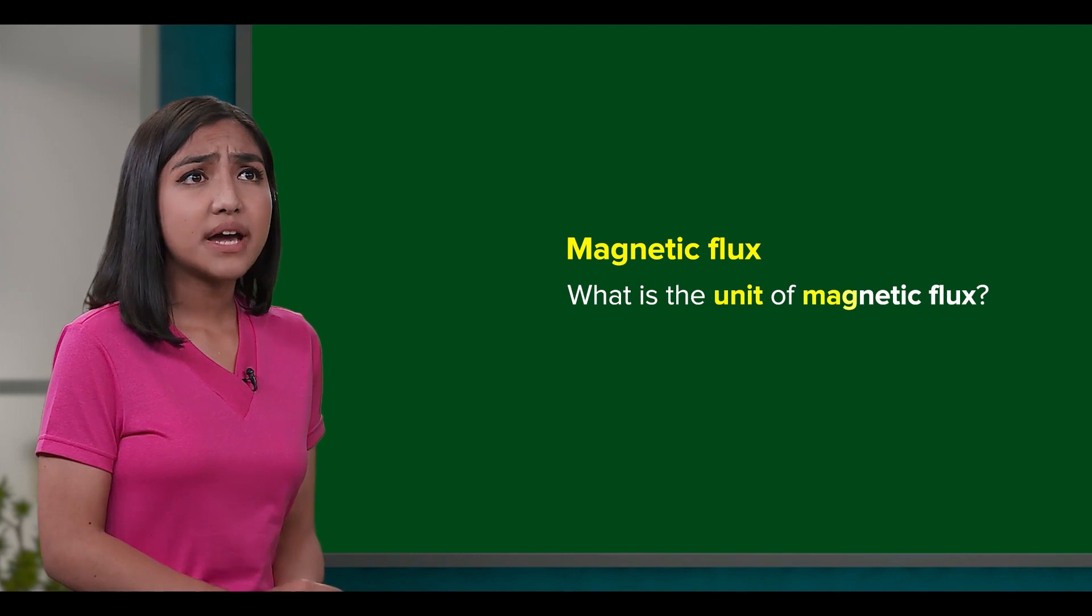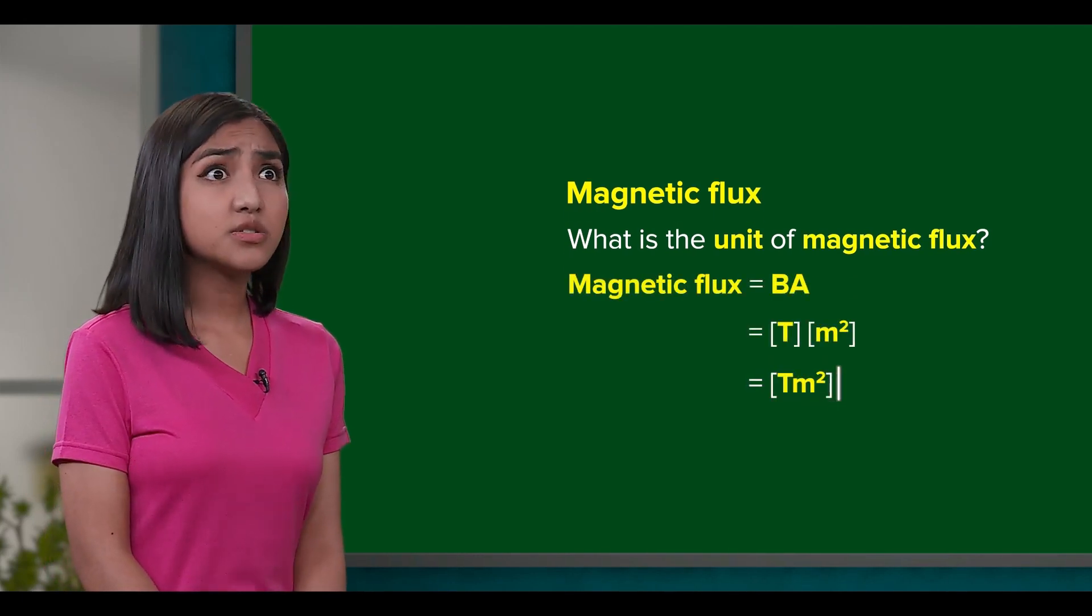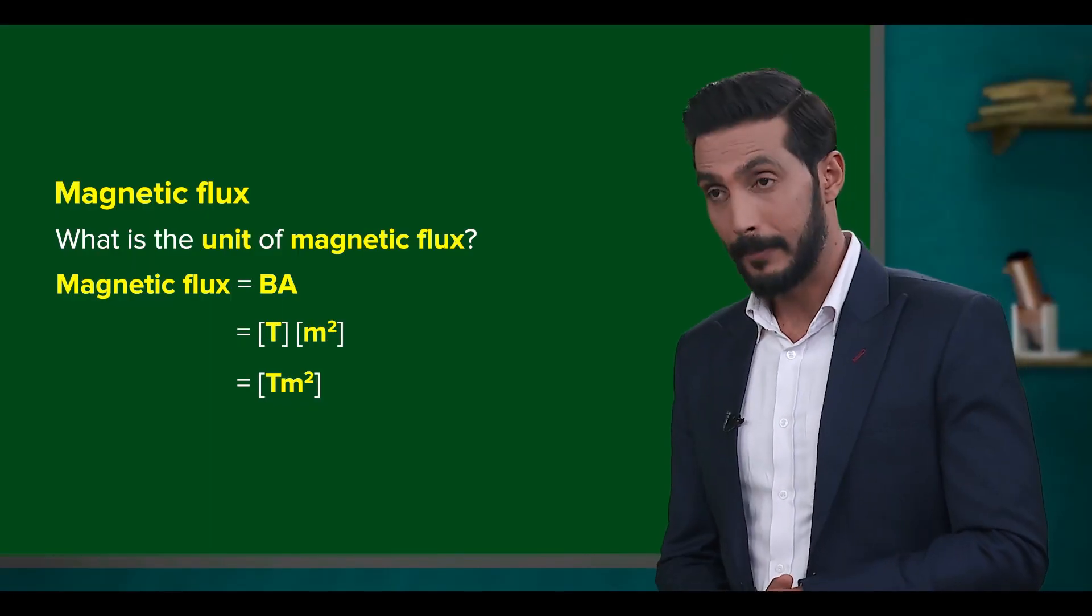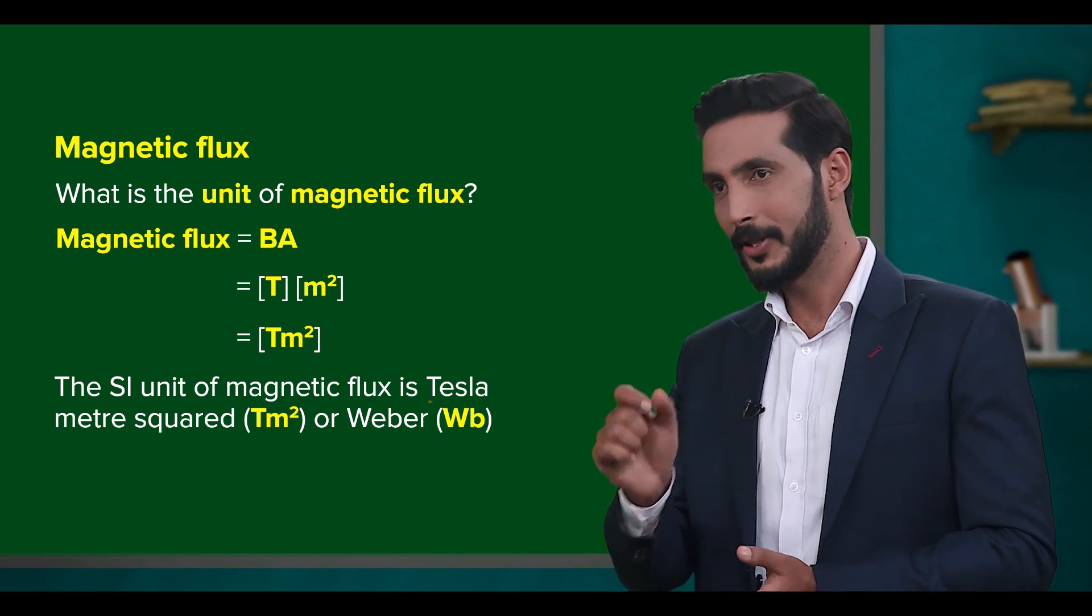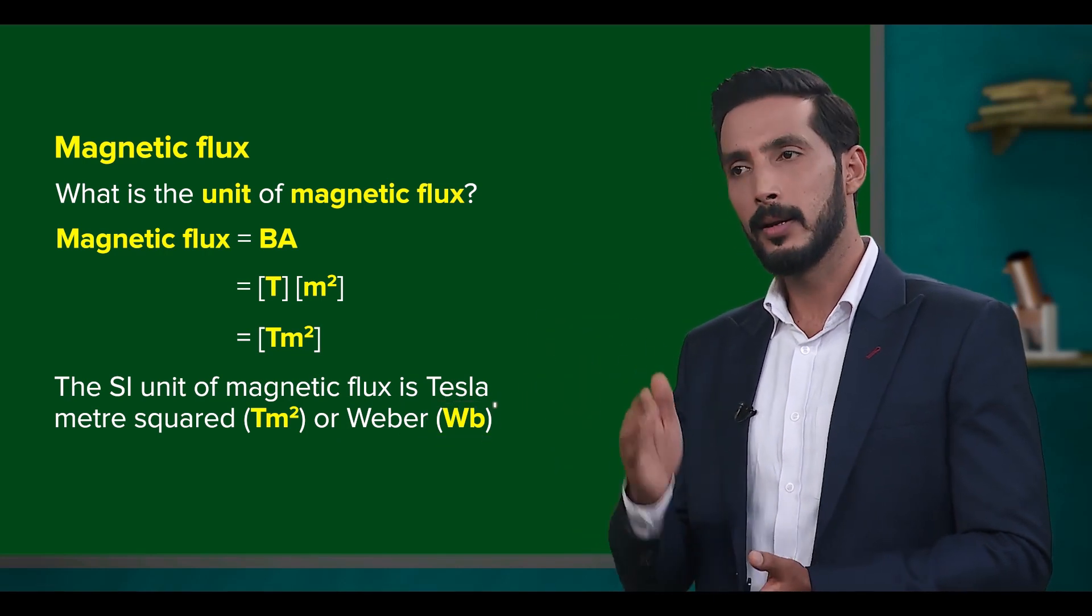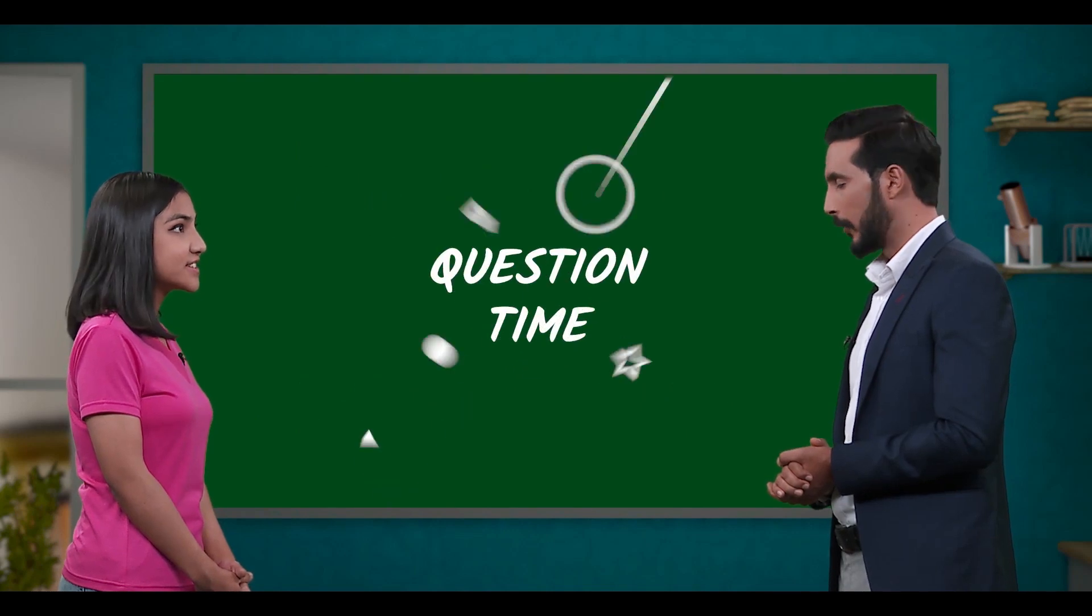So, what's the unit of magnetic flux, teacher? It should be Tesla meter squared, right? Exactly. And this unit is known as the Weber, denoted by a capital W and a small b. Cool. We should do a problem to test this out. Oh, you bet.